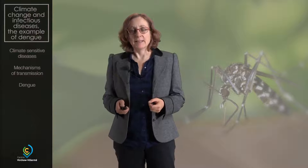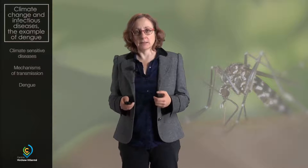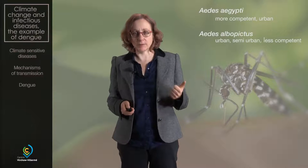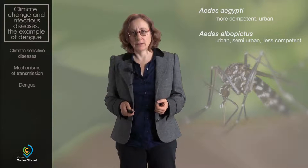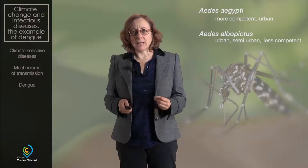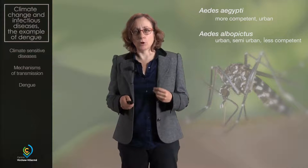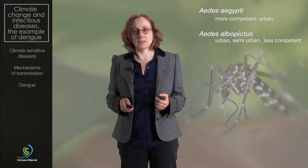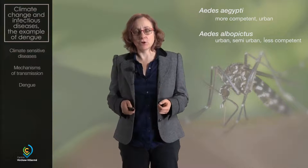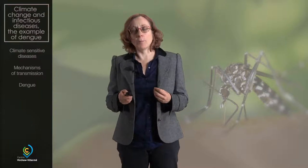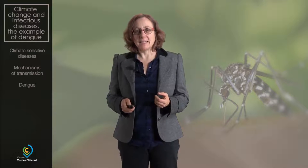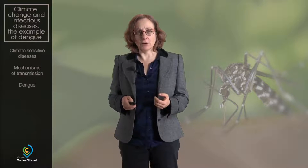Now I will tell you more specifically about dengue. Dengue is transmitted by a mosquito. There are two main mosquitoes that transmit dengue: the Aedes aegypti and the Aedes albopictus, also known as the Asian tiger mosquito. For the transmission of dengue, Aedes aegypti is more competent — more effective — at transmitting the disease, and is much associated with urban locations. Dengue is actually a very complex disease, and many factors come into the efficacy of transmission.